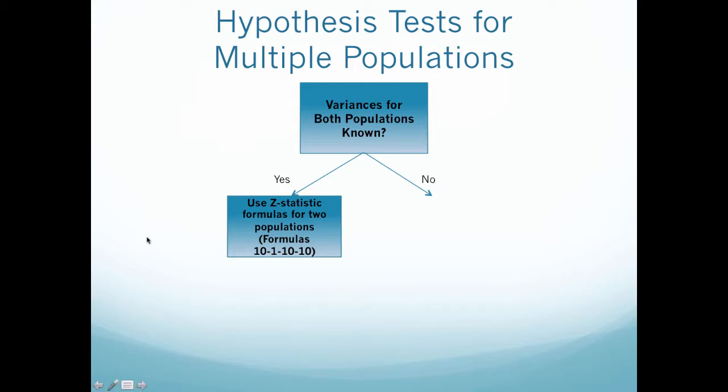So when the variance is not known, then we have to get into some t-statistic formulas. So if my variance for both populations is not known, that is when I'm going to come onto this branch right here. In order to proceed, I'm going to ask myself, are my variances equal? So they're not necessarily known, but usually we can assume or we can be told that they'll be equal or they will be different.